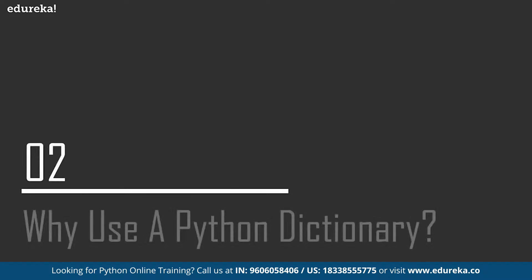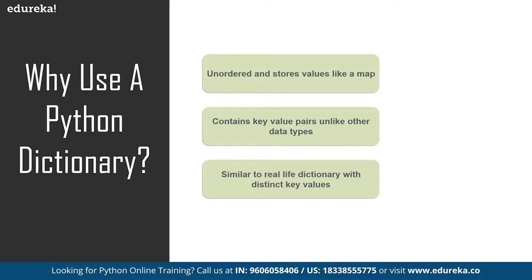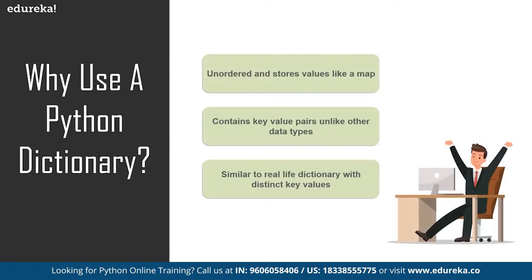Now that we know what dictionary in Python is, let's talk about why we use a dictionary in Python. First of all, it is unordered and stores data like a map, which is one unique feature that Python dictionary has, and it also contains the key-value pairs. Unlike any other data type or object in Python, it is almost similar to a real-life dictionary where we have distinct values and corresponding definitions.